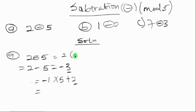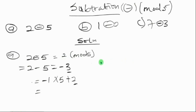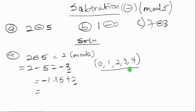You cannot get a negative answer in modular arithmetic. No matter what you calculate, your answer will always be positive because the valid range for mod 5 is only the residues: 0, 1, 2, 3, and 4.